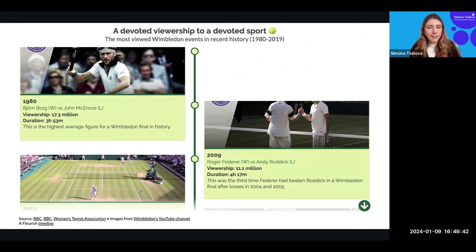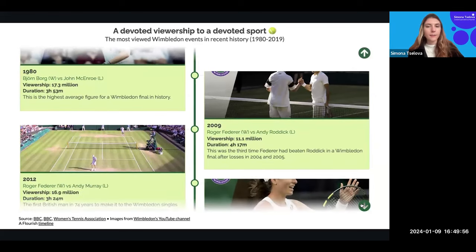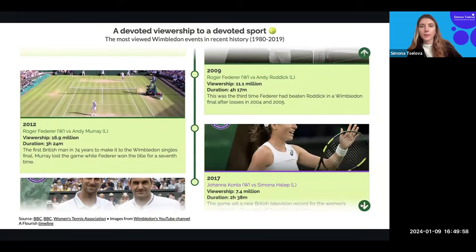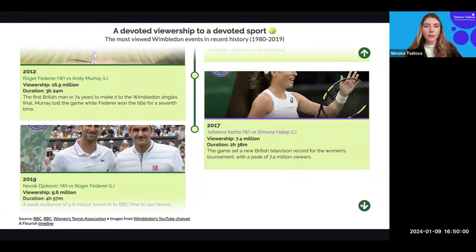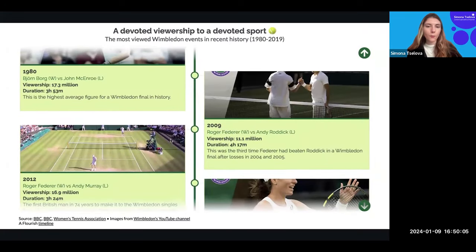Here is a timeline example we created for a blog about Wimbledon — showing some of the most viewed events in the history of Wimbledon. This is a vertical timeline, so the directions are up and down rather than left and right. You can have a banner-like image that contributes to the text of your visualization — another way to display content.